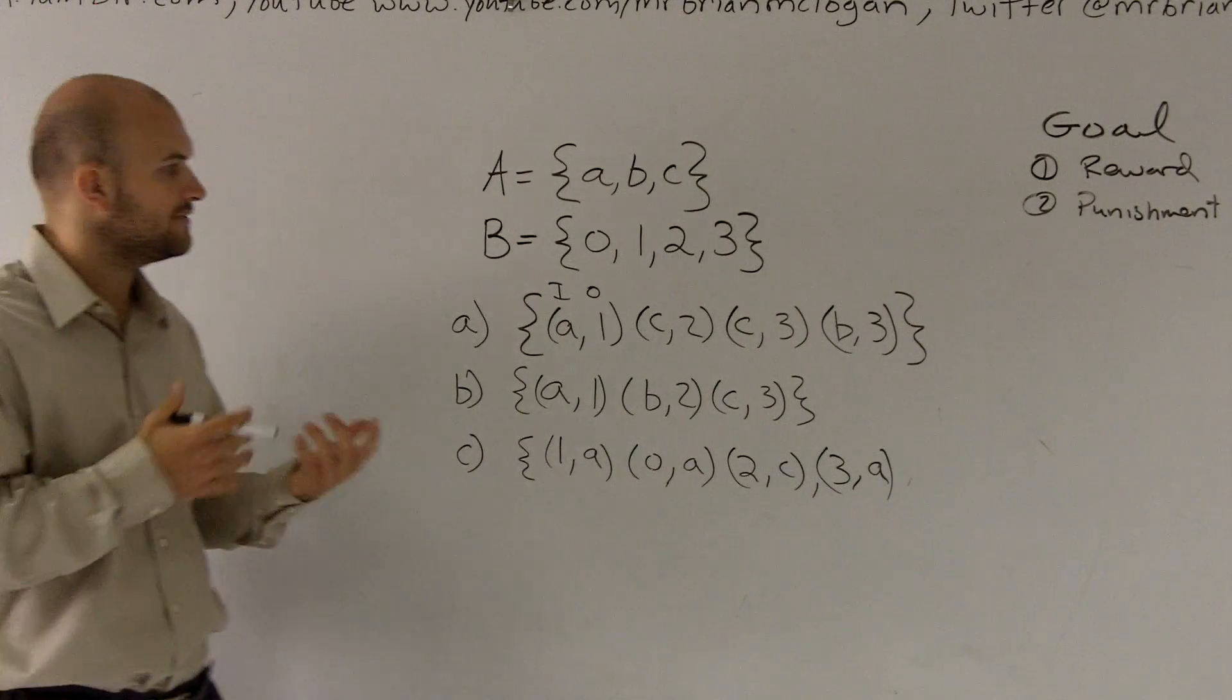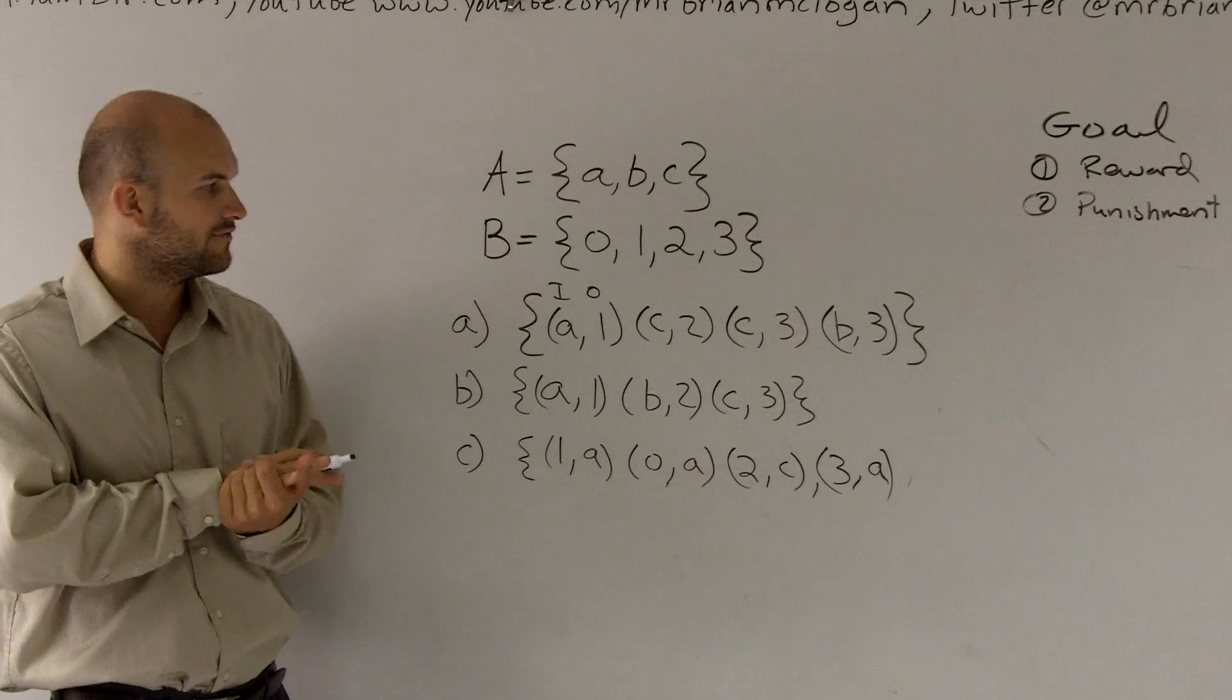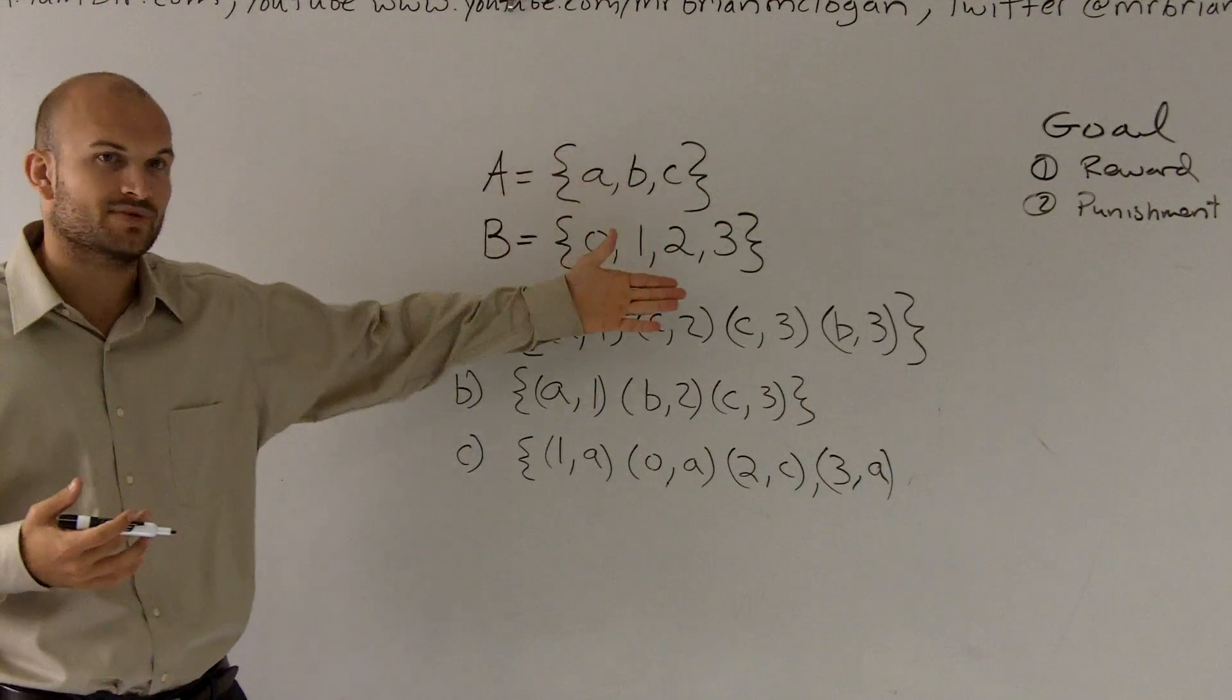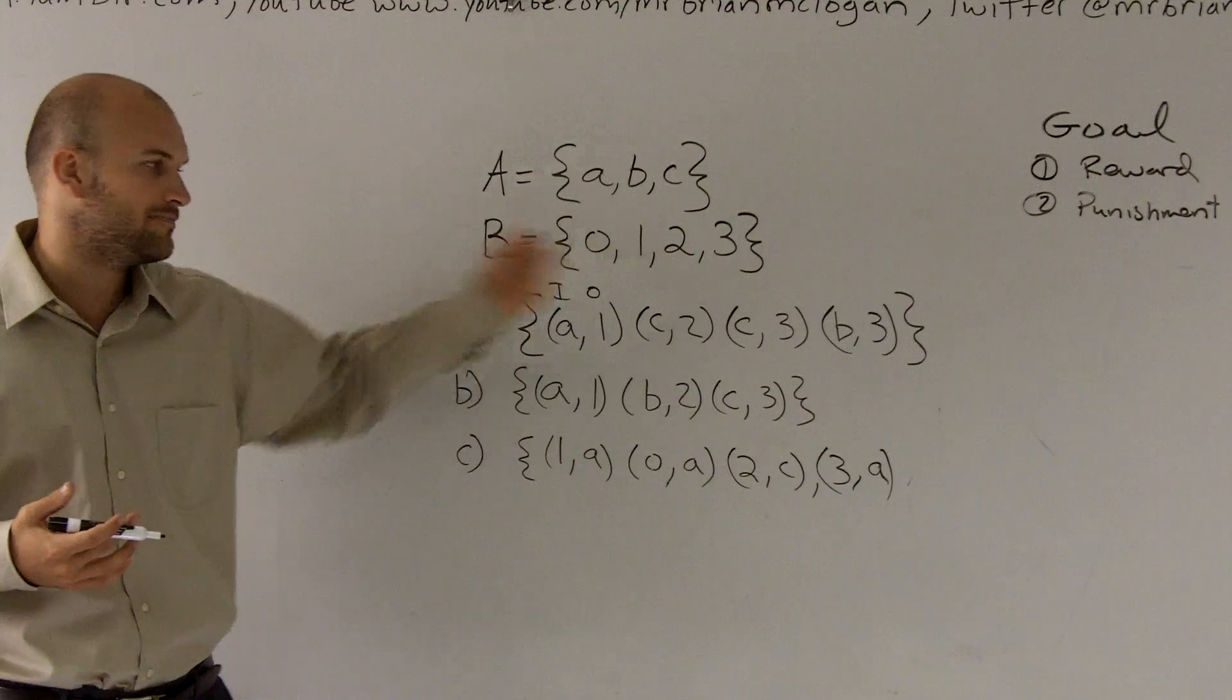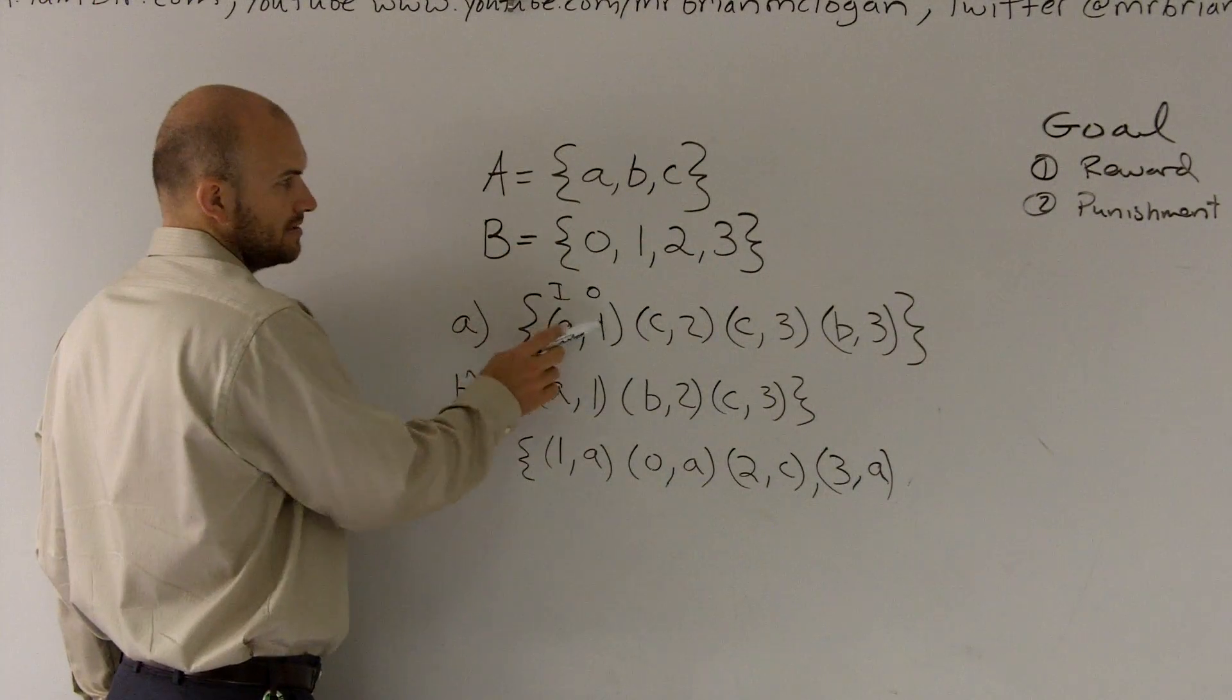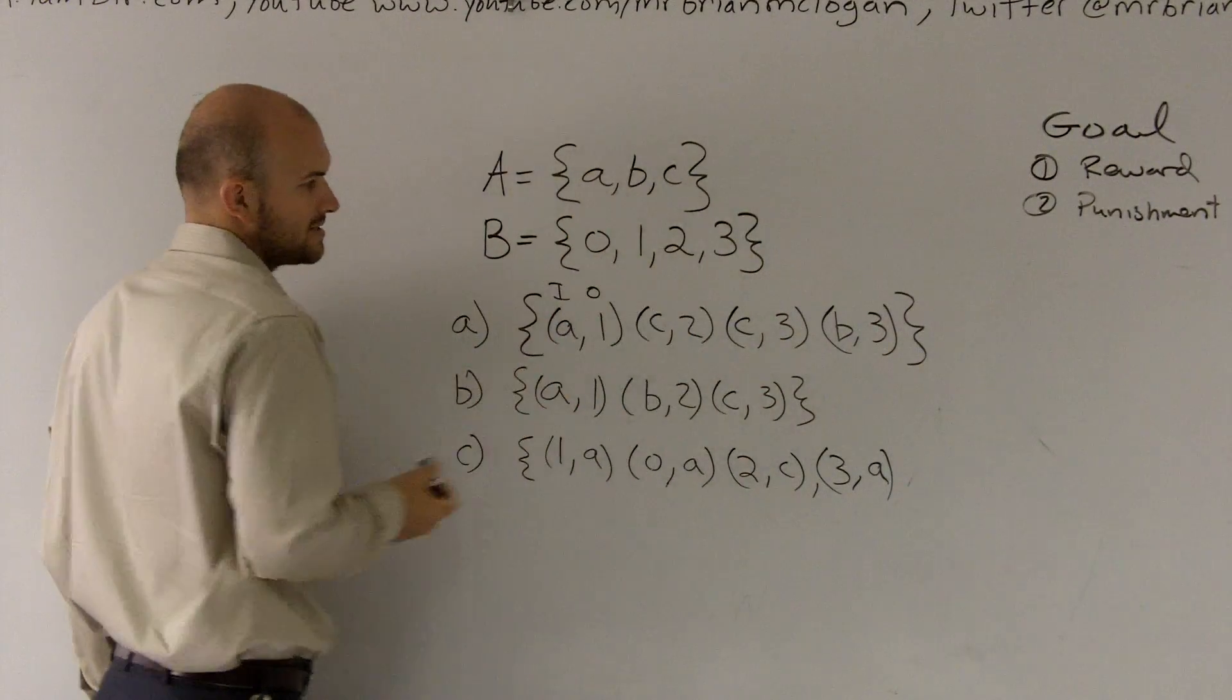Now, there's a couple things to remember to determine if it's a functional relationship. First thing is everything in set A has to map to everything or something in set B. So first thing we look at, does A map to something? Yes. Does B map to something? Yes. Does C map to something? Yes.